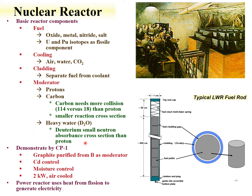Heavy water can also be used as both a moderator and coolant — the CANDU reactors are an example. One advantage of a heavy water reactor is that uranium does not need to be enriched, since natural uranium's uranium-235 content is sufficient. This is because deuterium has a small neutron absorption cross-section compared to protons. The Chicago Pile-1 used a graphite moderator purified from boron, since boron has a large neutron capture cross-section. Cadmium was used as a control rod material, and it was air-cooled, producing about two kilowatts of heat.